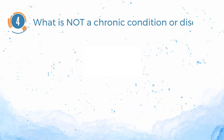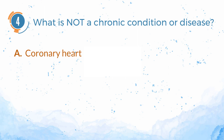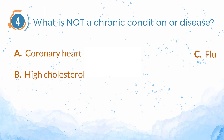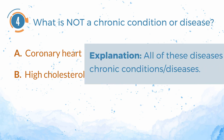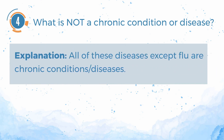Number 4. What is not a chronic condition or disease? A. Coronary heart disease. B. High cholesterol. C. Flu. D. Diabetes mellitus. The answer is C. Flu. Explanation: all of these diseases except flu are chronic conditions or diseases.